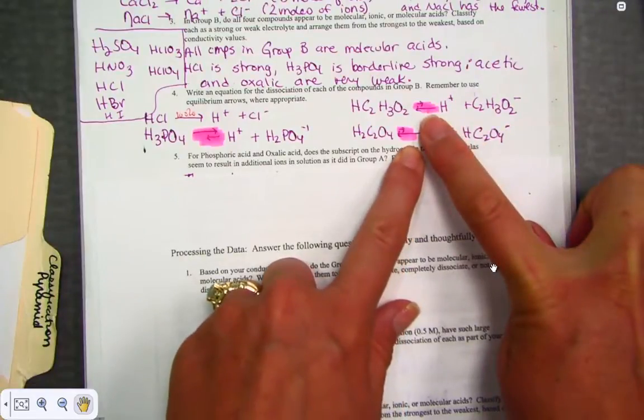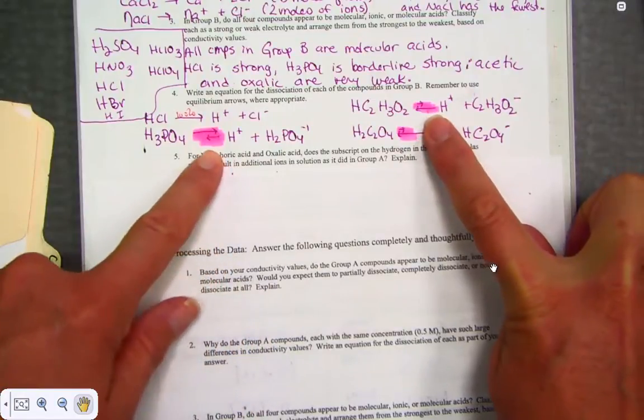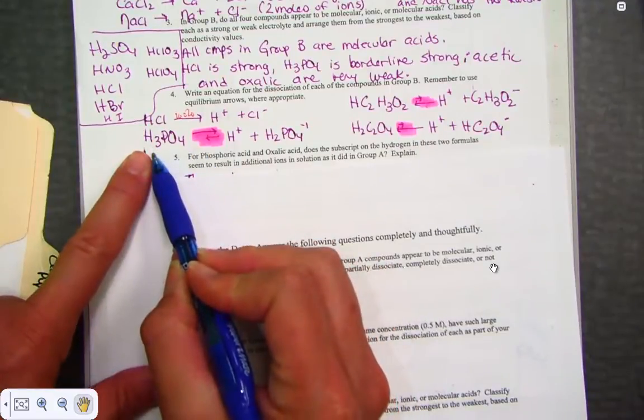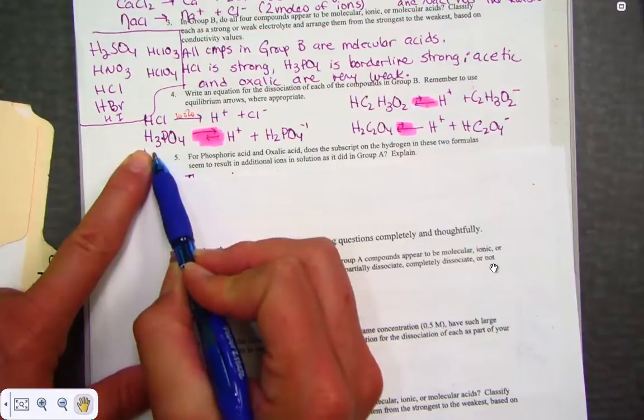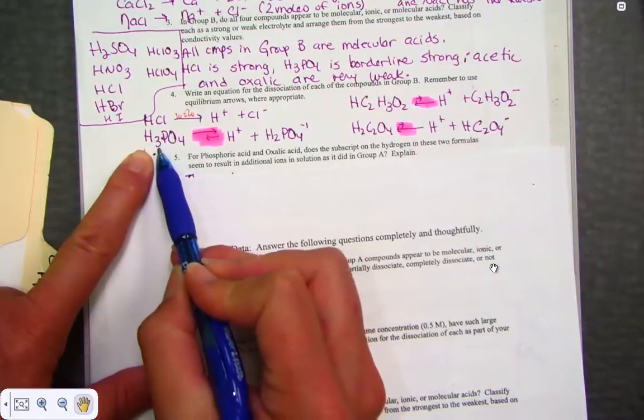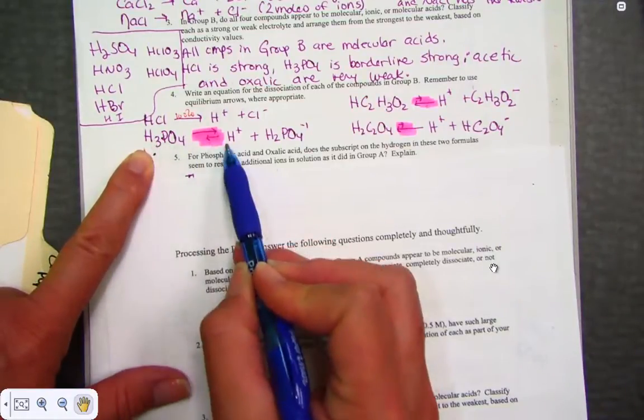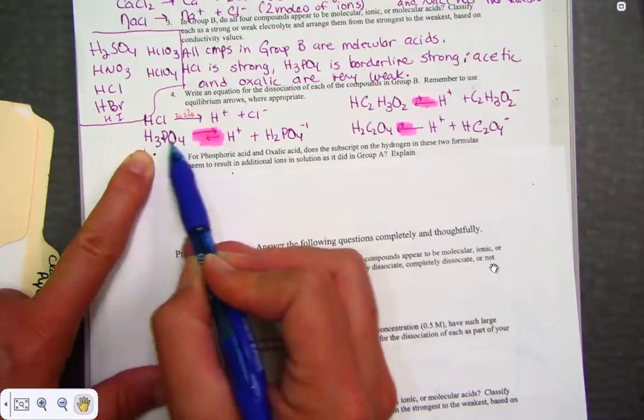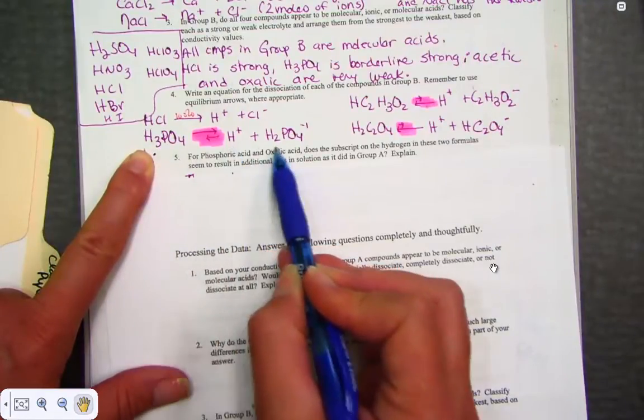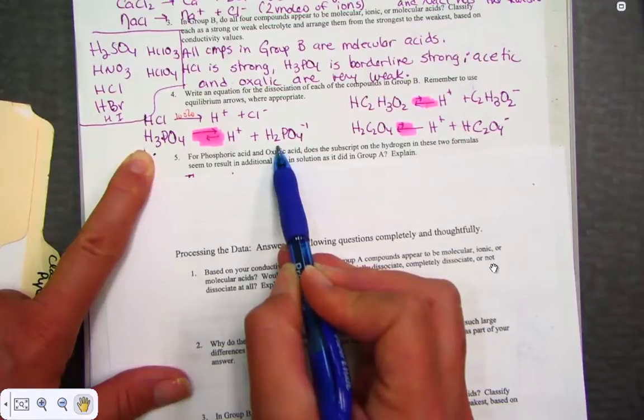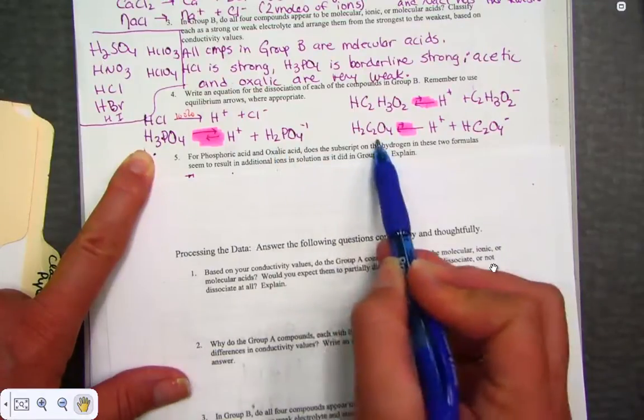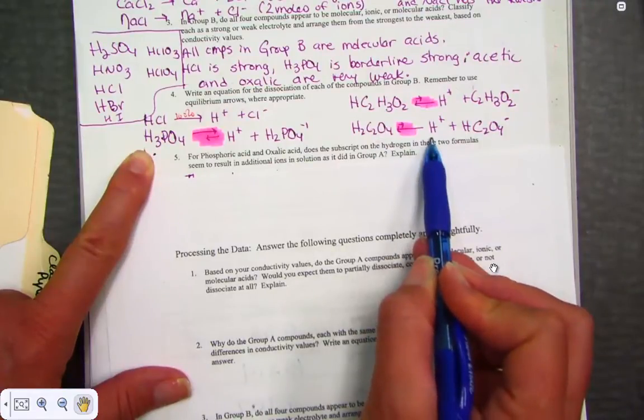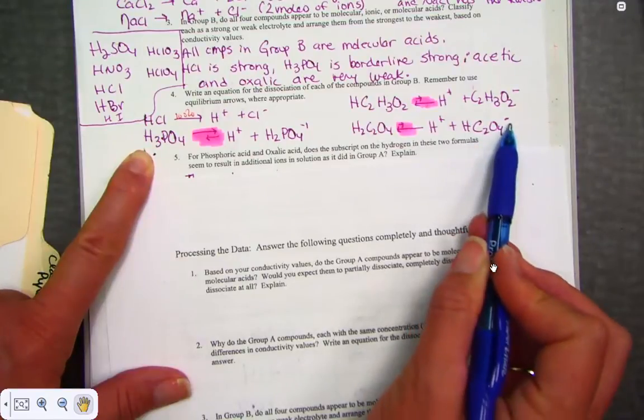Notice what I've done with phosphoric. I exaggerated the equilibrium arrows to show it did give quite a significant value for conductivity, so I'm pointing more favorably to the right in terms of conducting with ions than to the left non-conducting molecules. I exaggerate over here with acetic acid, hardly pointing to the right at all, and I exaggerate with oxalic acid, hardly dissociating at all because we had very low readings for conductivity. The equilibrium values can be expressed with the length of the arrow. One other comment here, be sure that we're only ionizing one hydrogen at a time.